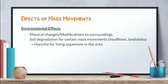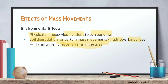The third effect is environmental. A mass movement causes physical changes and modifications to the surroundings. Mud flows, rotational slips, and slumps cause soil degradation, which is harmful to living organisms in the area and leads to environmental degradation in the long run. Soil degradation is very difficult to reverse, making it a serious and lasting consequence of mass movements such as mudflows and landslides.